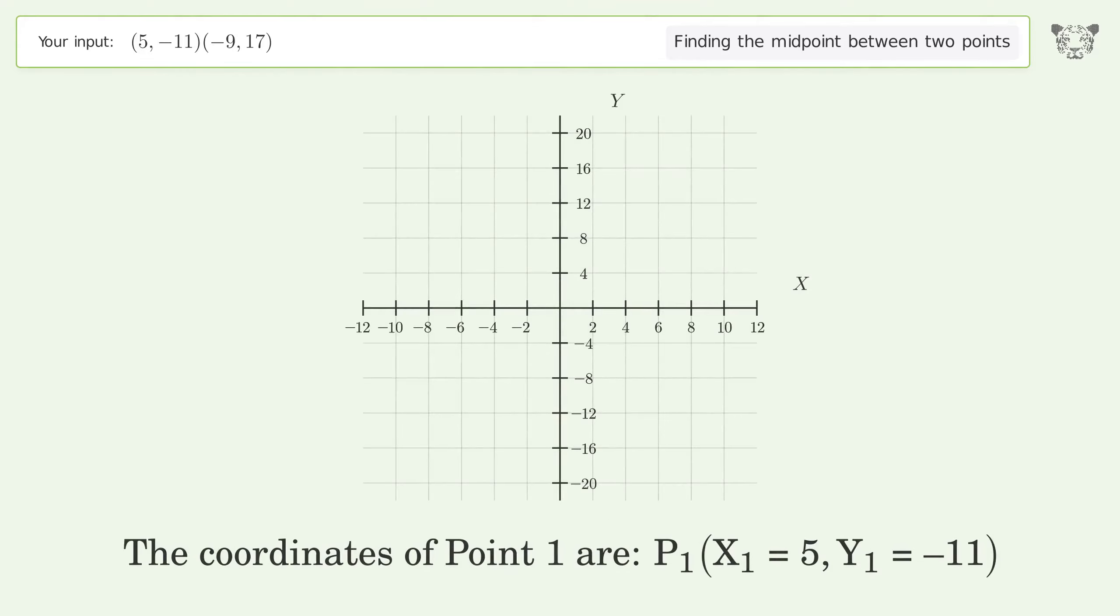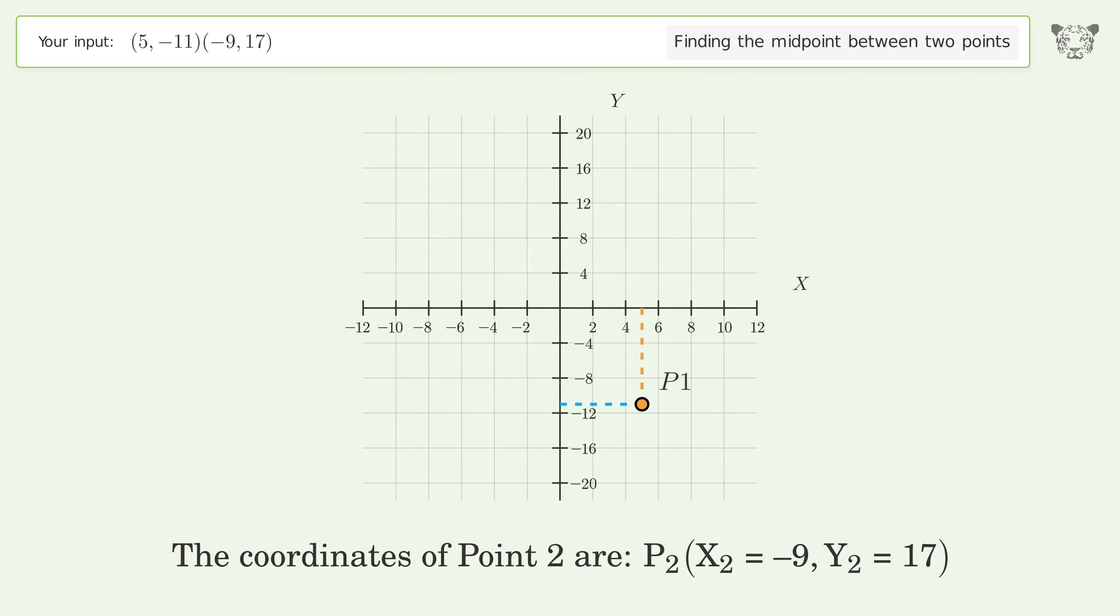The coordinates of Point 1 are: x1 equals 5, y1 equals -11. The coordinates of Point 2 are: x2 equals -9, y2 equals 17. Pm represents the midpoint of the two points.